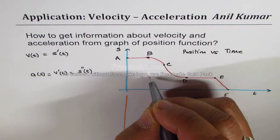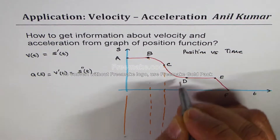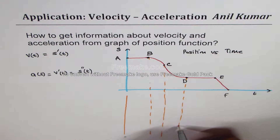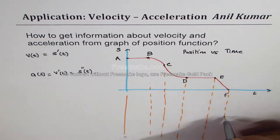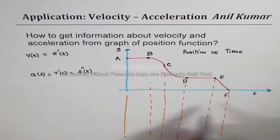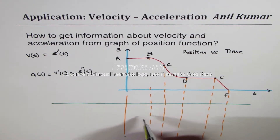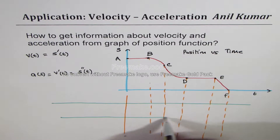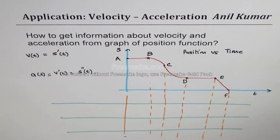We will discuss two things in these different intervals: what happens to velocity and acceleration. Let me create a table where we can write down whether velocity is positive, negative, or zero, and the same for acceleration — whether it is positive, negative, or zero. At these different intervals we'll discuss that part.